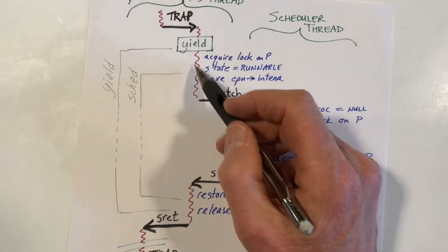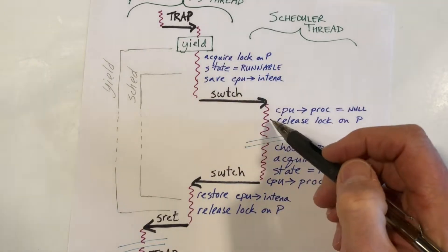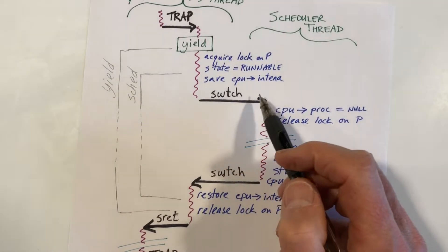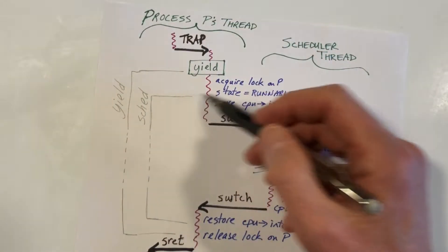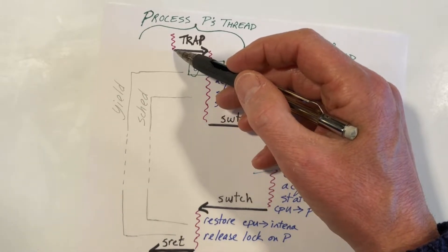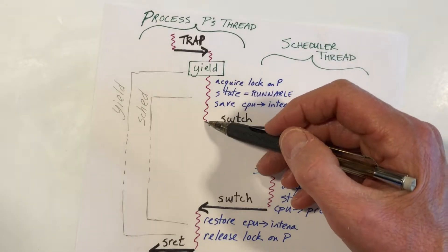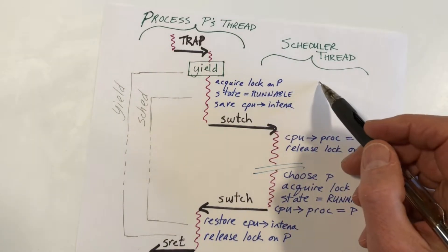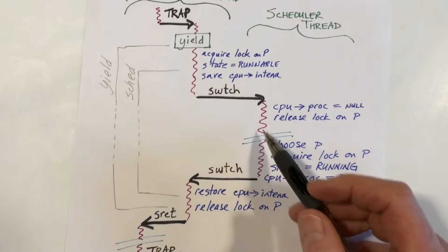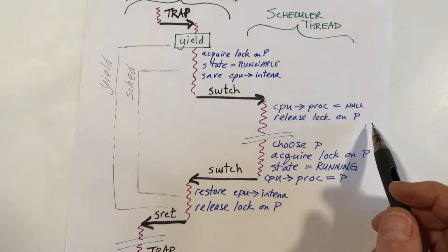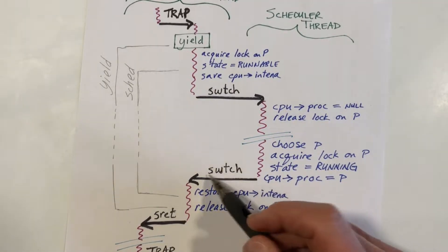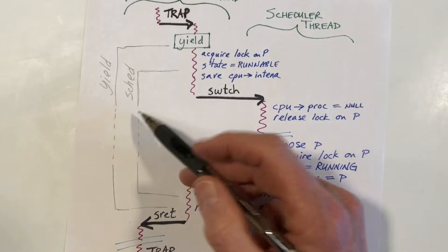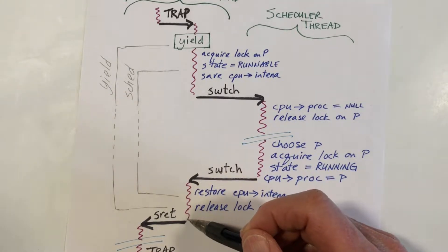Yield calls SCED. Not much happens in yield and SCED — just a few statements are executed — and we call a function switch. So this is the processor thread: we are executing in user mode for process P, then in kernel mode for process P, and when the switch occurs, we switch from process P to the scheduler thread. The scheduler thread may do some other stuff, give time slices to other processes, but eventually the call to switch will return, and we'll continue executing in the SCED function and then the yield function.